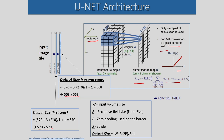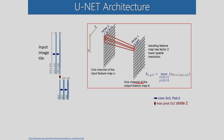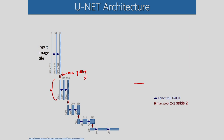After the first convolution the size of the feature map will be 570×570, and after the second convolution it will be 568×568. Before doing the next convolutions we do max pooling. These are the operations during the contraction phase.